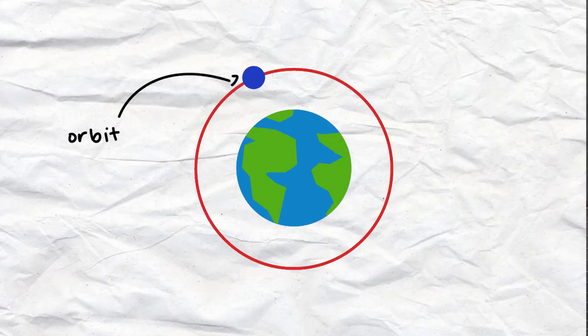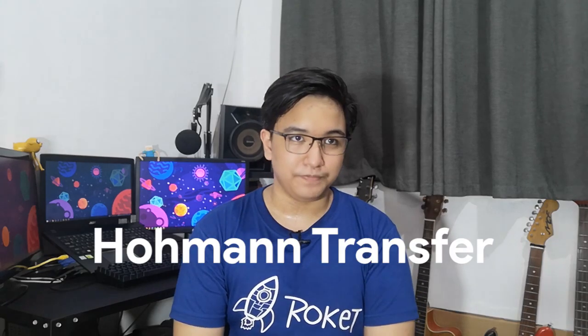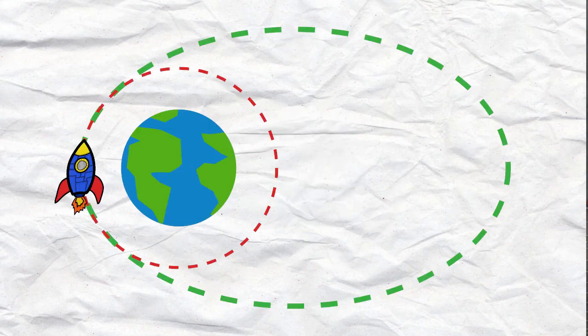But when you're in orbit, you're stuck there. How can we explore further then? We need to change our orbit. To do that, we perform a Hohmann transfer. This maneuver revolves around the idea that when an object accelerates, it travels a more elliptical path.